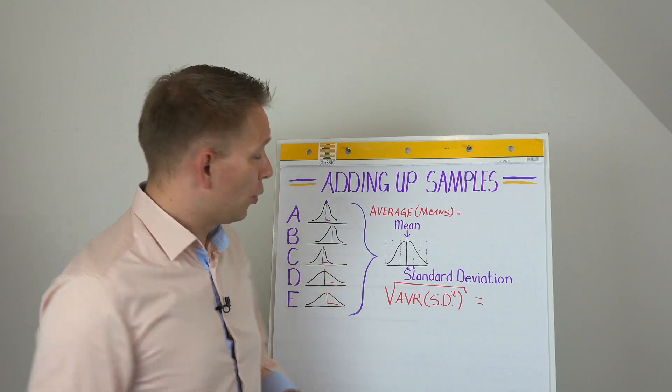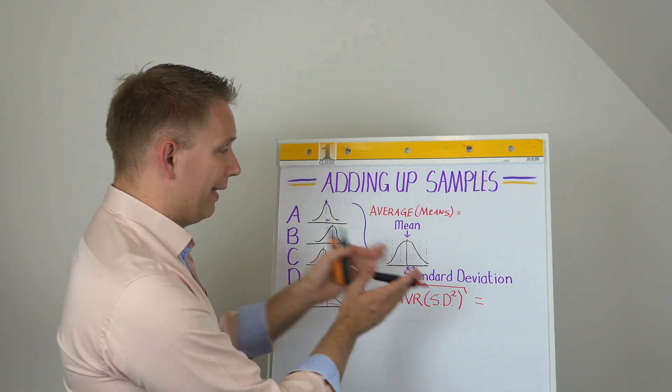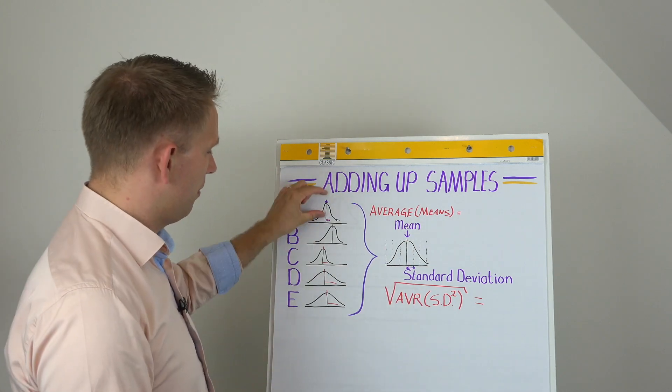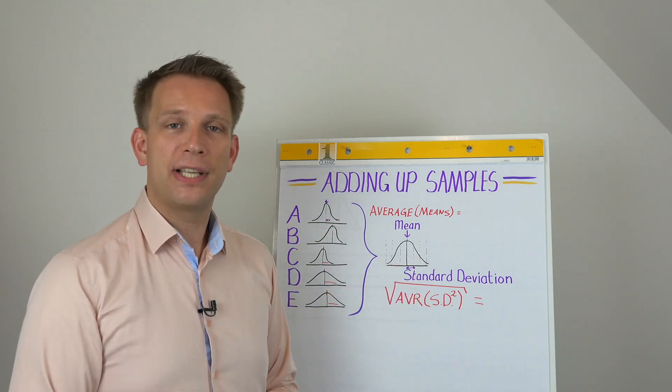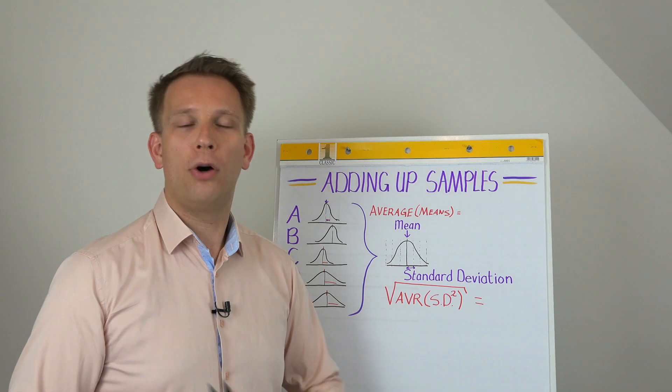And like this, we can get the mean and the standard deviation from several sample sets and combine them into the mean and standard deviation of the total of those samples.